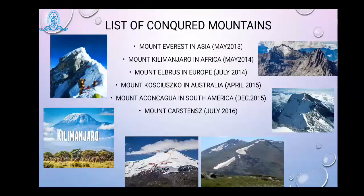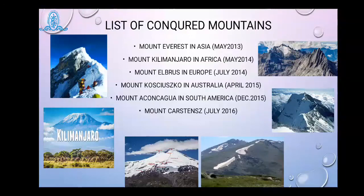After that, she also conquered mountains from 7 continents. After climbing Mount Everest, she climbed Mount Kilimanjaro in Africa, Mount Elbrus in Europe, Mount Kosciuszko in Australia, Mount Aconcagua in South America, and Mount Carstensz — different types of mountains she was able to climb.